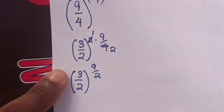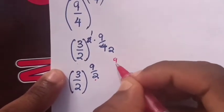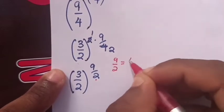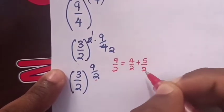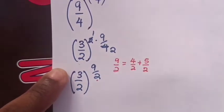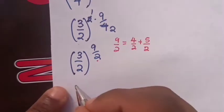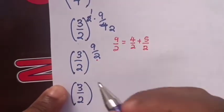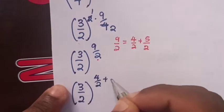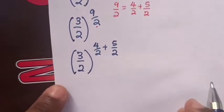From the power of 9 over 2, we write it as 4 over 2 plus 5 over 2. So we substitute the power 9 over 2 with 4 over 2 plus 5 over 2. Then 4 over 2 is equal to 2.